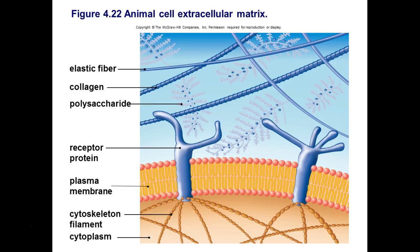Here we can see an artist's rendering of some of these molecules found outside of the plasma membrane in eukaryotic cells. Here we see an elastic fiber, some collagen, and some polysaccharide molecules. They're going to be hydrated — they hold onto water and provide an aqueous environment for the cell.